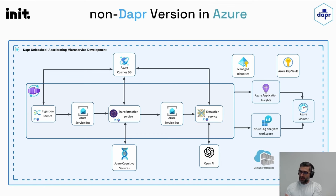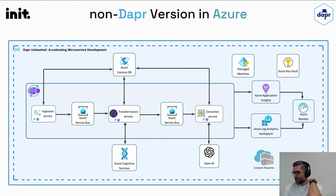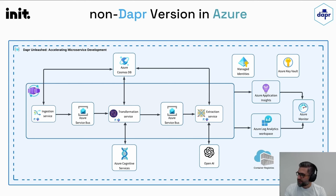This is the current architecture implemented in Azure, and as shown now, it runs in production at this moment. We have three microservice applications implemented in .NET running in Docker containers using Azure Container Services. We have Azure Service Bus queues between them and Cosmos DB as common storage. Of course, there are many more services being used like Cognitive Services, OpenAI, Application Insights, Key Vaults, Azure Monitor, and so on.